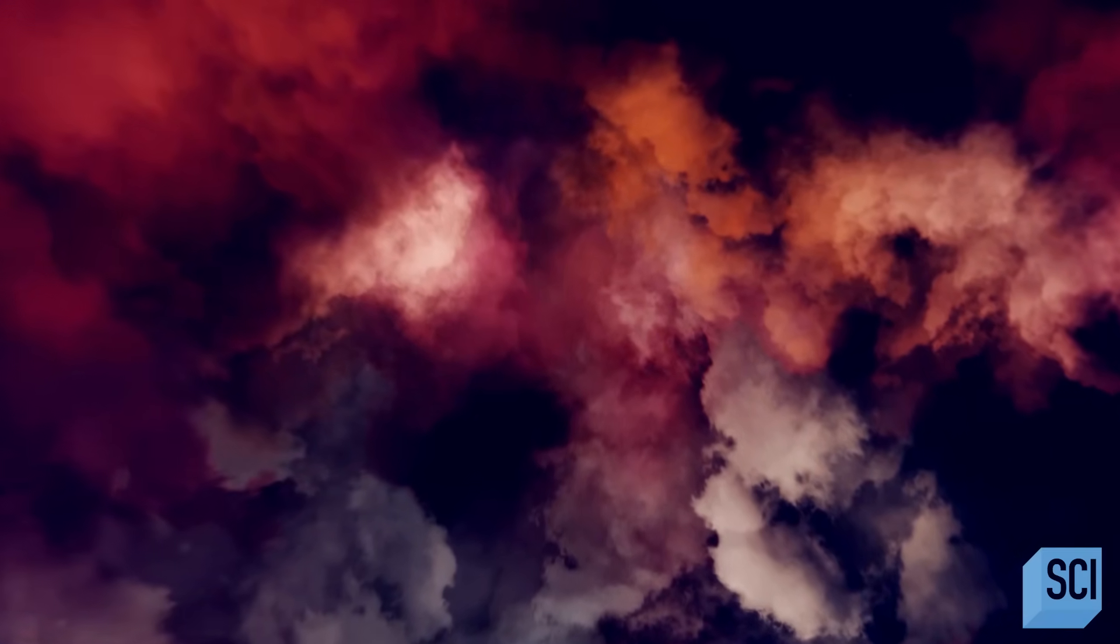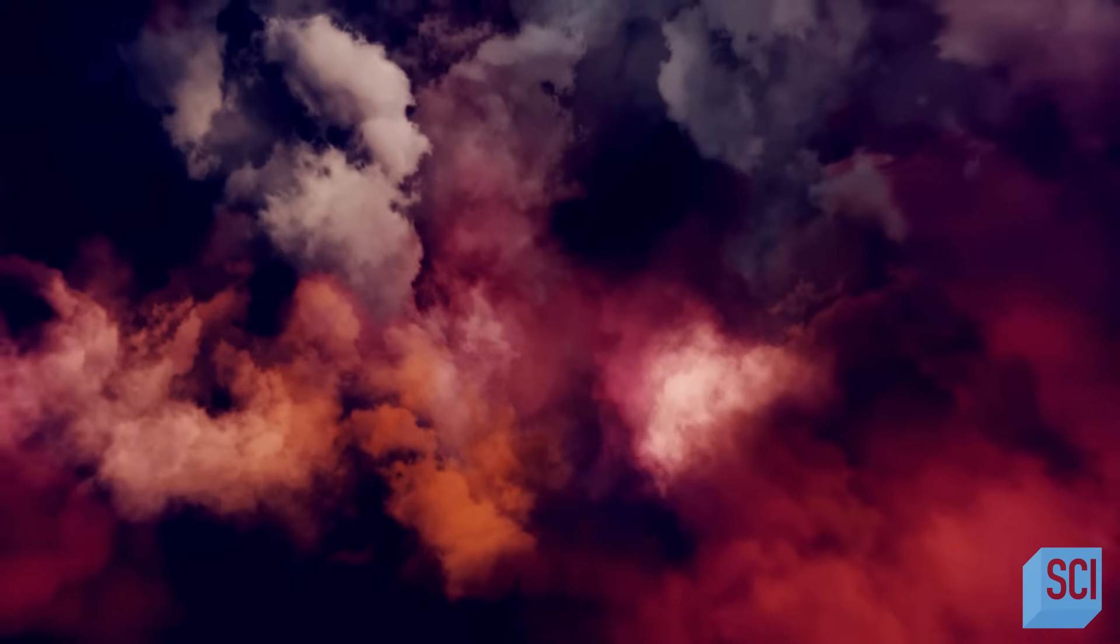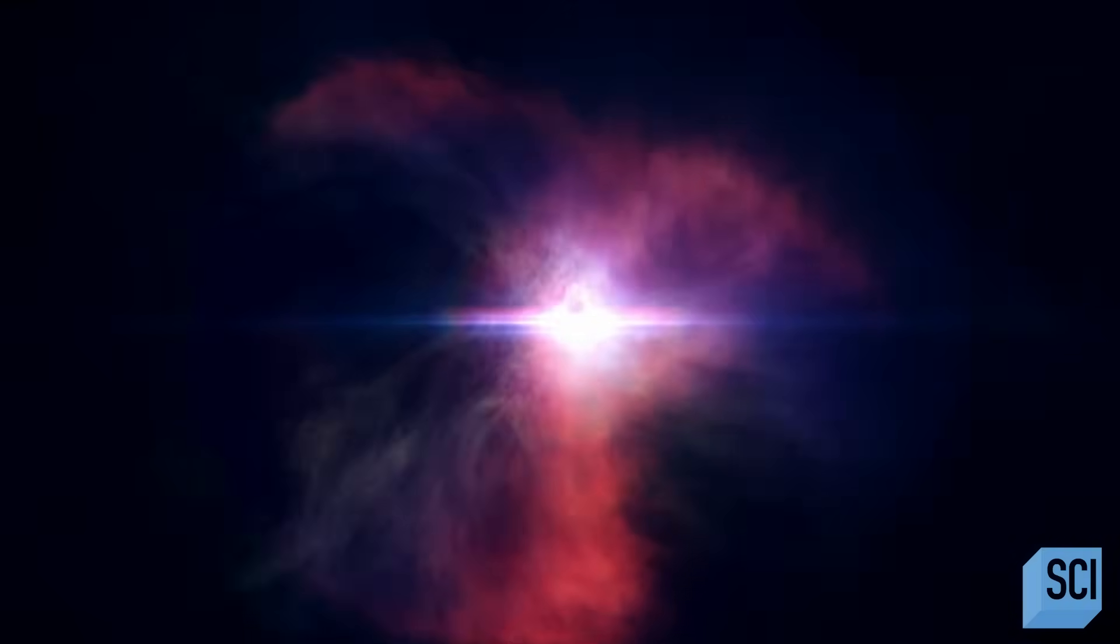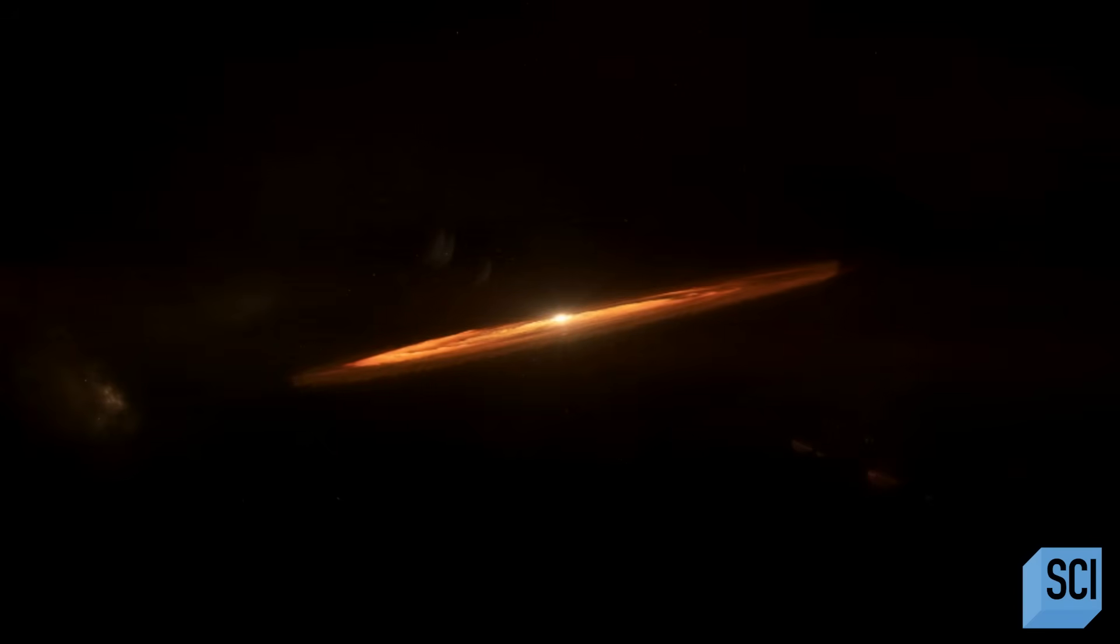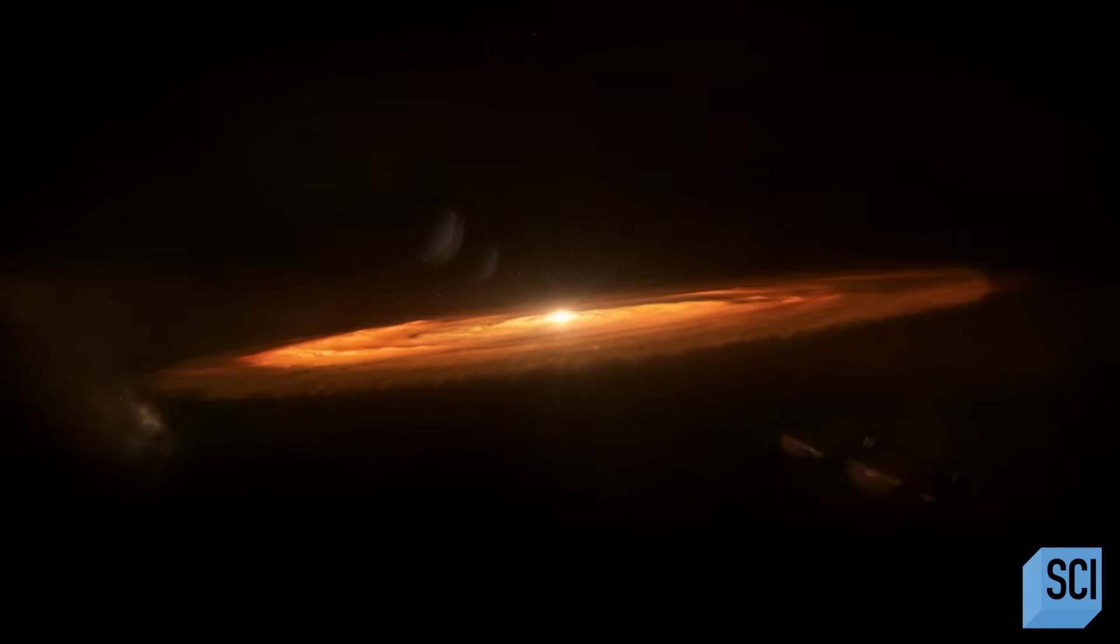Over time, the primordial nebula starts to collapse and fragment into smaller clumps. These regions become so dense, they collapse into disks with super hot balls of gas in their cores.